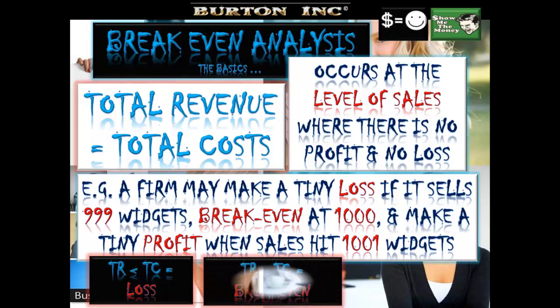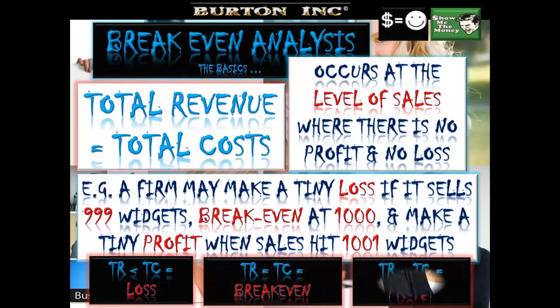If total revenues are smaller than total costs, we're talking about a loss. If total revenues are greater than total costs, we're talking about a profit. And where total revenues are equal to total costs, we are talking about the breakeven quantity of output.